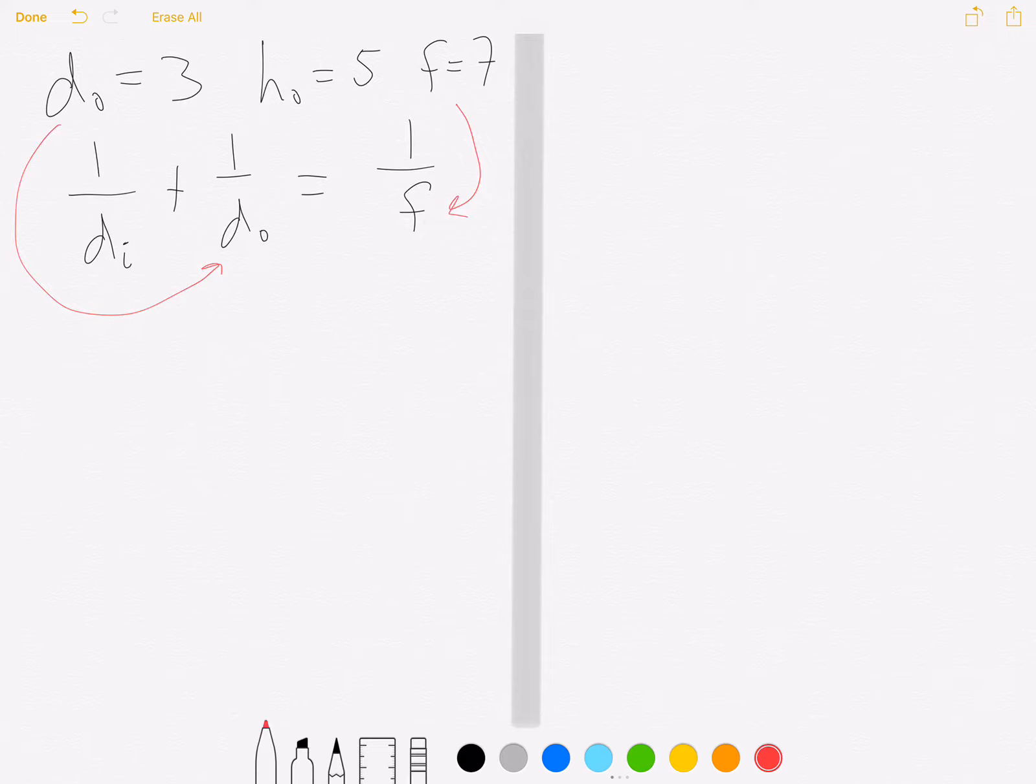We can plug this in right here. Let's take a look at what that gives us. 1 over di - and that's not an equals sign, that should be a plus - 1 over di plus 1 over 3 equals 1 over 7.